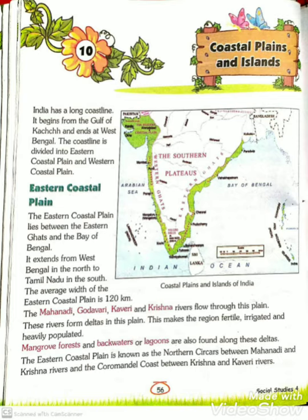The Eastern Coastal Plain lies between the Eastern Ghats and the Bay of Bengal. 'Lies' means to be in or remain. So, one side of the Eastern Coastal Plain is the Eastern Ghats and the other side is the Bay of Bengal, with the Eastern Coastal Plain in the middle. It extends from West Bengal in the north to Tamil Nadu in the south.